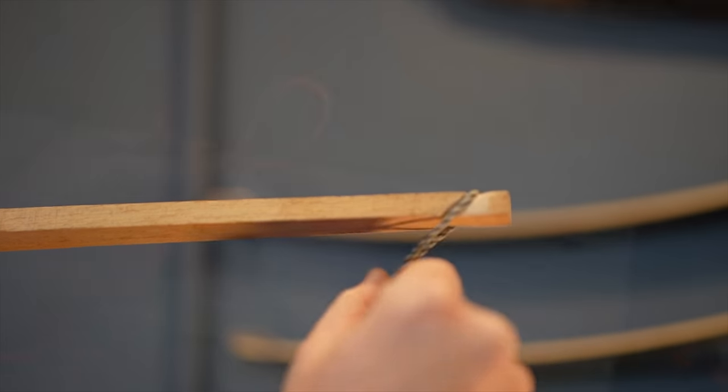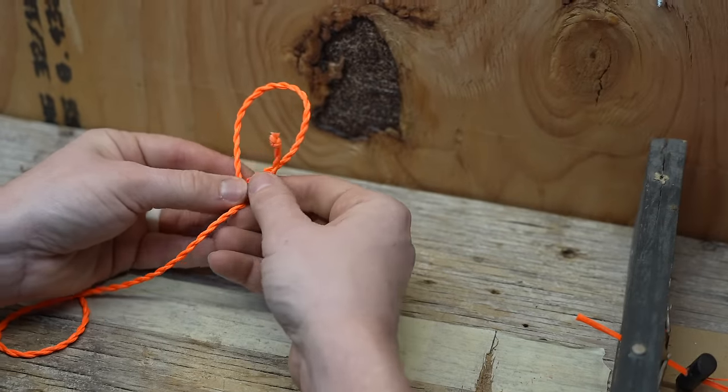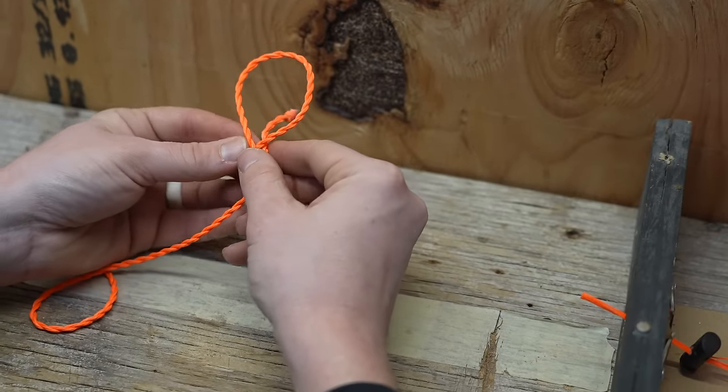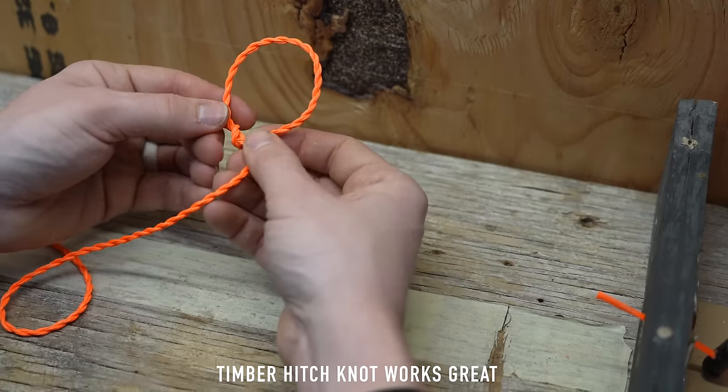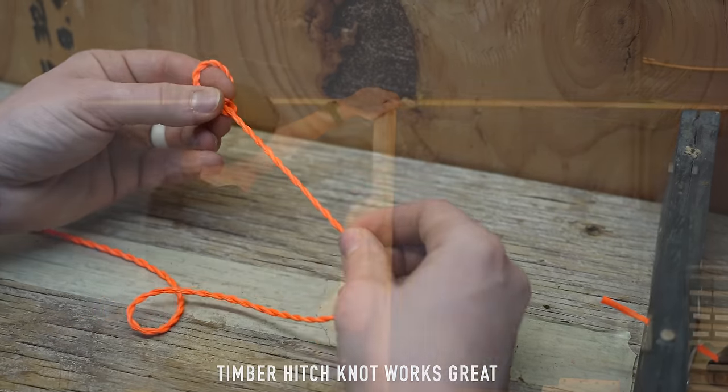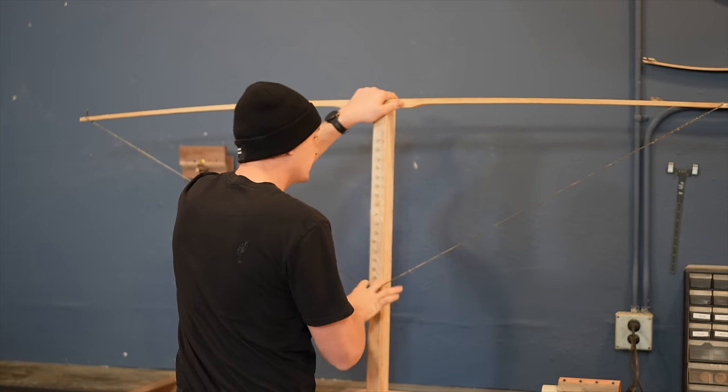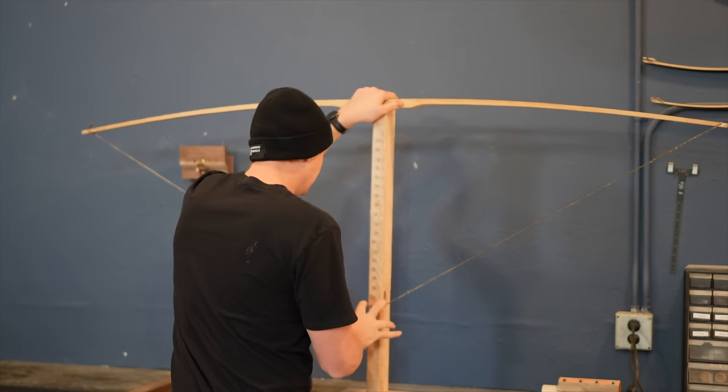So side one of the tillering string will go on the first string groove. For the second loop, I'll tie a quick release knot so that we can adjust it later on. The string is completely loose now, but it is on the string grooves. So now you can start putting a little bit of pressure on this bow by starting to bend it. As you can see, our bow's bending gently. Now we start to tiller.